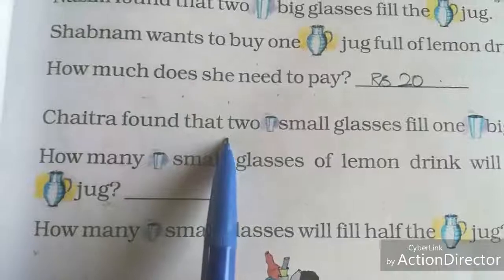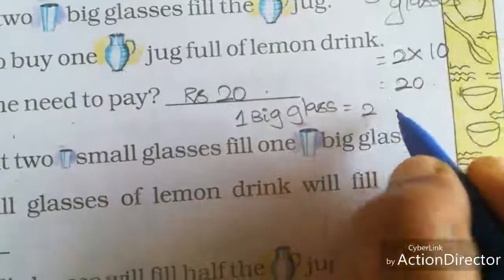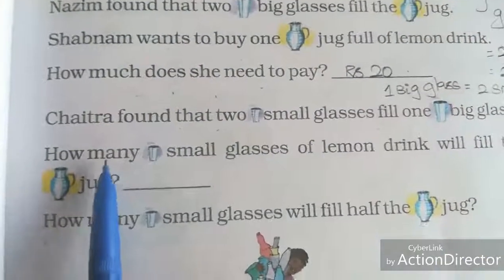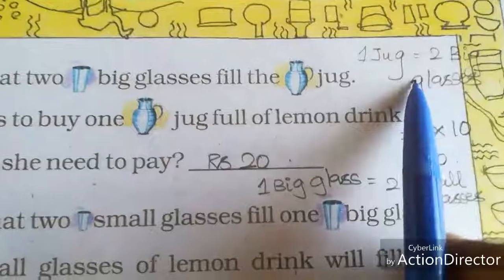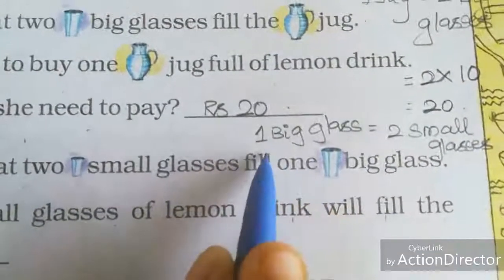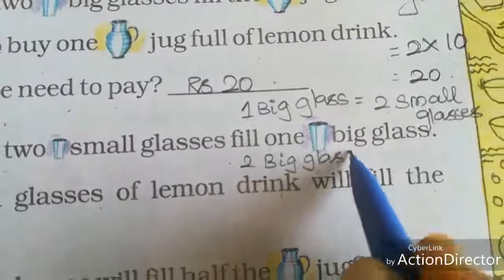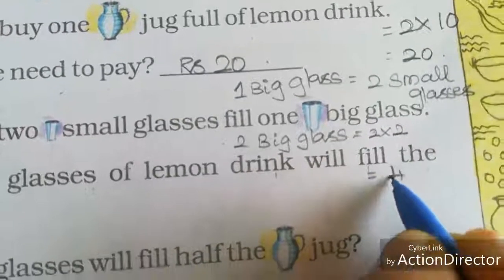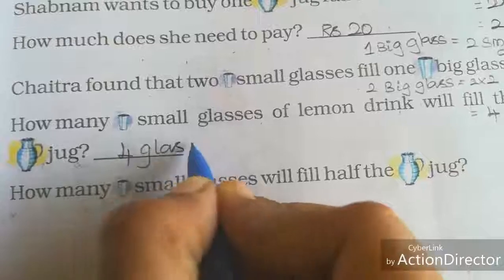Chaitra found that two small glasses fill one big glass, so one big glass equals two small glasses. How many small glasses of lemon drink will fill one jug? One jug equals two big glasses. For one big glass we need two small glasses, so for two big glasses: two times two equals four. A total of four small glasses fill one jug.